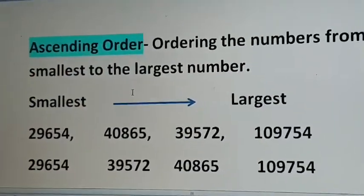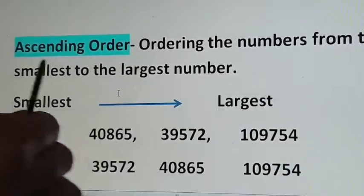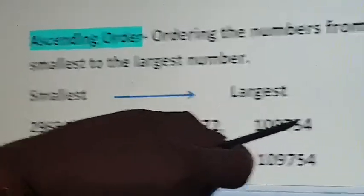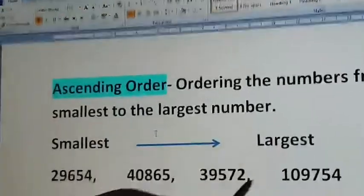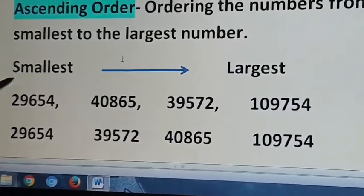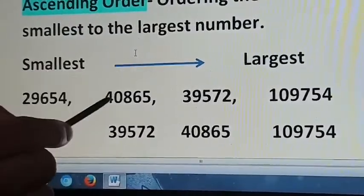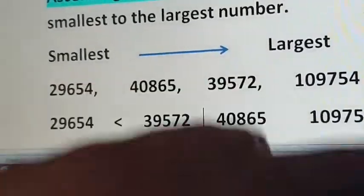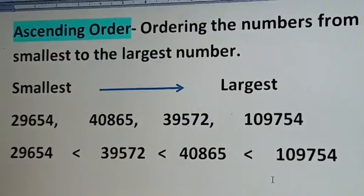Now ascending order — ordering numbers from the smallest to the largest. Always remember, ascending means smallest to largest. We already know how to compare numbers. First count the digits: three numbers are 5-digit and one is 6-digit, so the 6-digit number is the largest. Now compare the first place of the 5-digit numbers: 2, 4, and 3. The smallest is 2, so that number comes first, then 3, then 4. When writing in ascending order, use the less-than sign, not a comma.